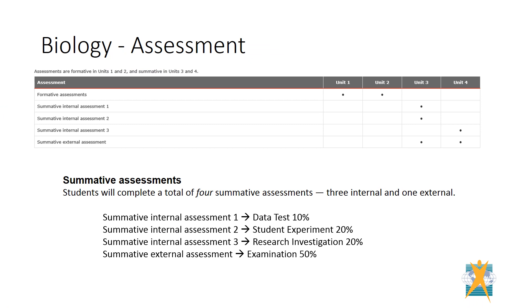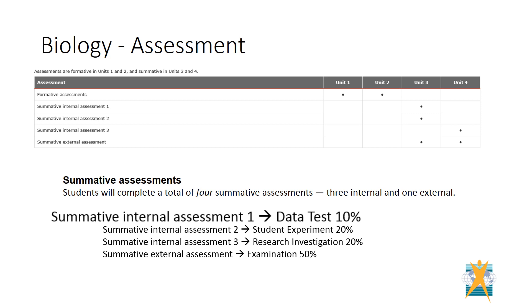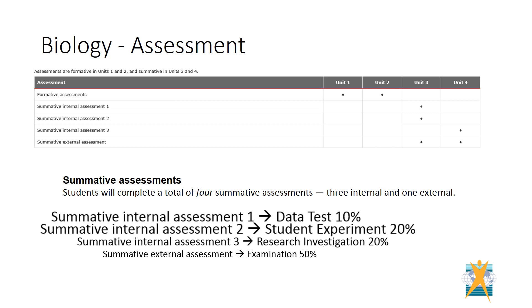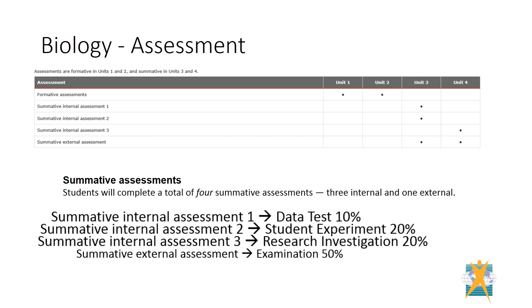Or the very popular Lady Elliot Island field work camp. In Biology, there are a number of assessment items. In Units 1 and 2, all assessment items are formative. The summative assessment items cover Unit 3 and 4. In Unit 3 and 4, there is an internal assessment which is a data test worth 10%, a student experiment worth 20%, a research investigation worth 20%, and finally an external examination worth 50%, which covers both Units 3 and 4.